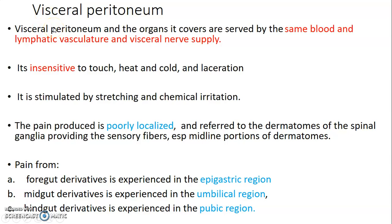Visceral peritoneum, together with the organs it invests, has the same blood supply, lymphatic drainage, and visceral nerve supply — not somatic. Because it's visceral nerve supply, it's insensitive to touch, heat, cold, and laceration, and it's stimulated by stretching and chemical irritation.